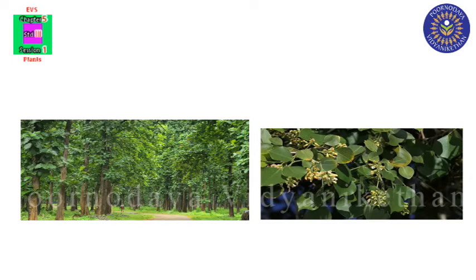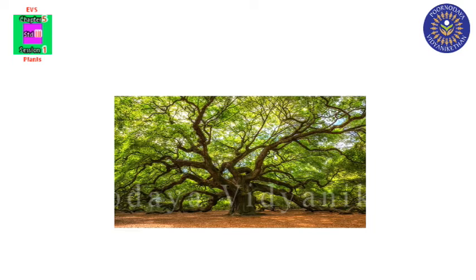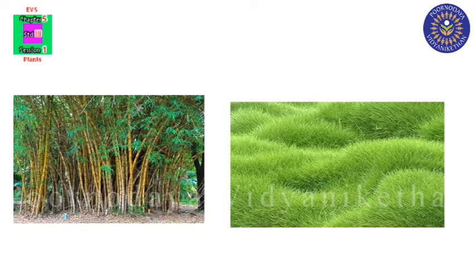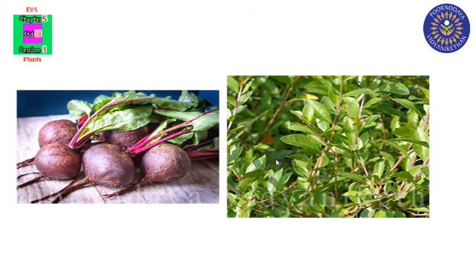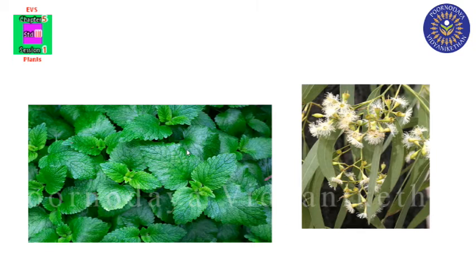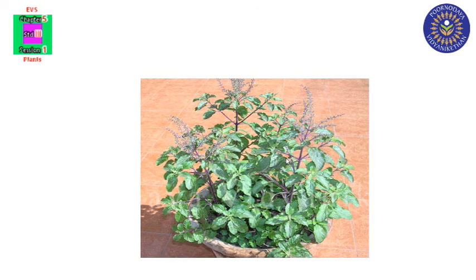Wood from trees like teak, shisham, and oak is used to make things like doors, windows, and carts. Bamboo and many grasses are used to make paper. We make dyes using parts of plants like beetroot, henna, and indigo. Many plants like neem, ginger, mint, eucalyptus, and tulsi have medicinal value.